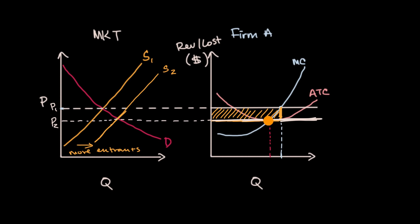At this point, not only is marginal revenue intersecting marginal cost, but that's exactly at the point where marginal cost equals average total cost. In a perfectly competitive firm, they are productively efficient — producing the quantity that minimizes their average total cost. While marginal cost is below average total cost, average total cost keeps falling; once marginal cost rises above average total cost, the average total cost curve starts curving up.